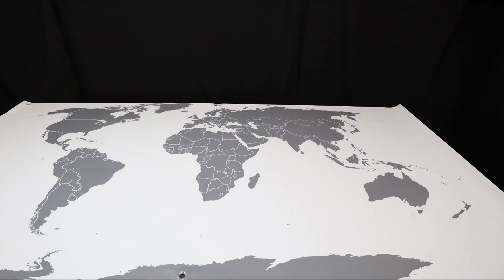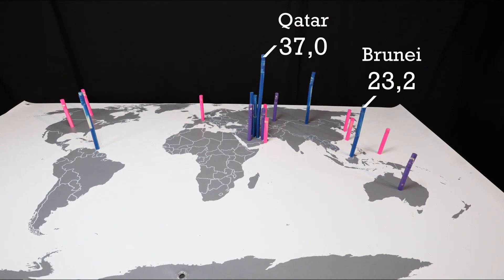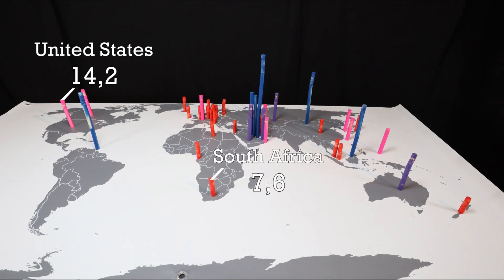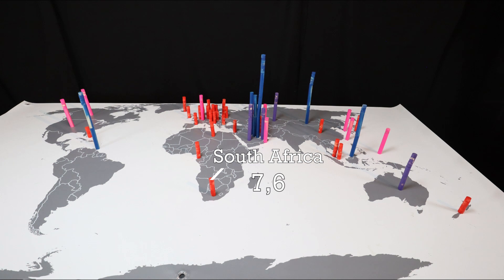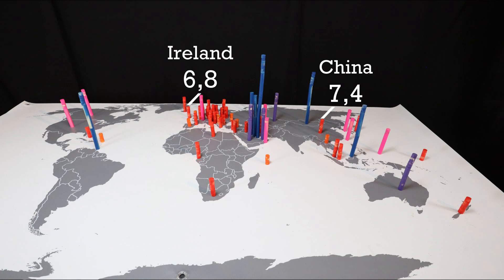We will now shift focus and look at emissions per capita. Here, markers indicate 1 tonne of emitted carbon dioxide per inhabitant per year. Now the map looks very different. Countries in blue have emissions above 20 tons per capita. Countries in purple have emissions between 15 and 20 tons. In pink, between 10 and 15. In red, between 5 and 10. In orange, between 1 and 5. And in yellow, below 1 tonne per person per year.